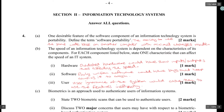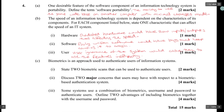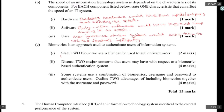Biometrics is an approach used to authenticate users of information systems. Two biometric scans that can be used to authenticate users are: fingerprint, face detection, and iris scan.